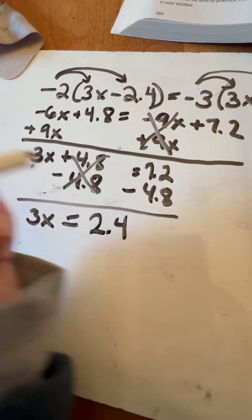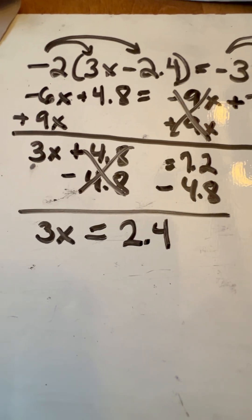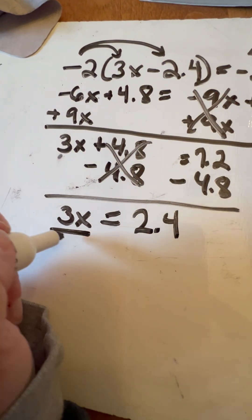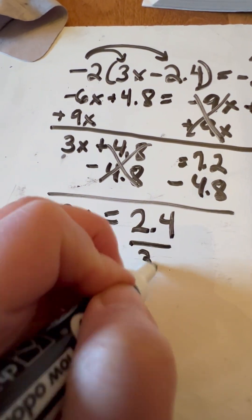And then our last step, we want to always do the inverse operation. So this is multiplication. So we're going to divide both sides by the 3.